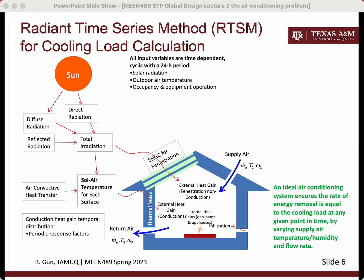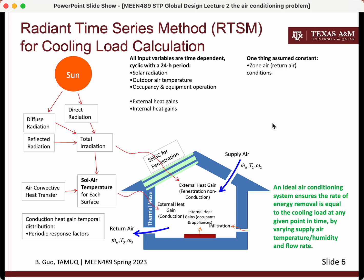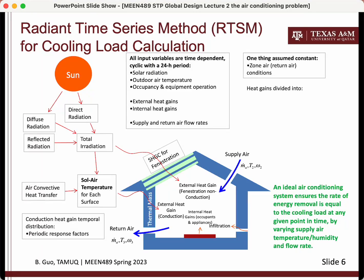The design conditions for the air conditioning problem include outside weather conditions including solar radiation, and the building's occupancy and operating schedule. The zone air or return air condition is a fixed condition selected by the designer. The designer uses these input conditions to determine the heat gains, which are further divided into radiative and convective as well as sensible and latent. Latent heat gain is always convective. The designer usually also needs to determine the ventilation rate — the flow rate of fresh air — though this may be unnecessary for a small shelter with a high rate of infiltration.